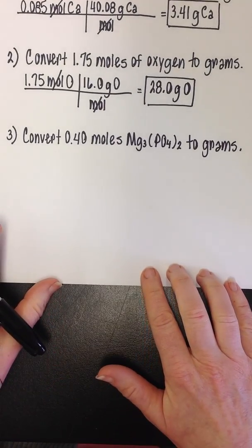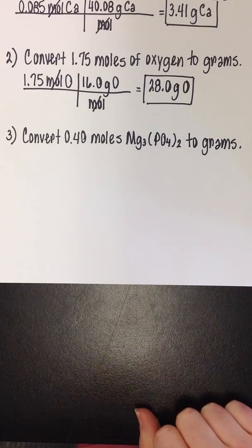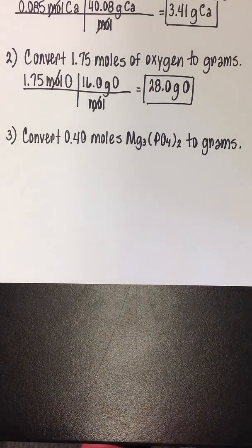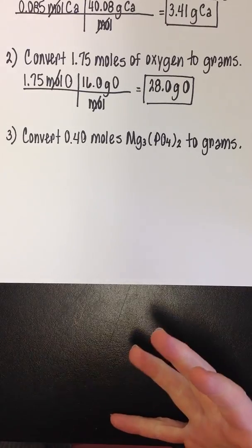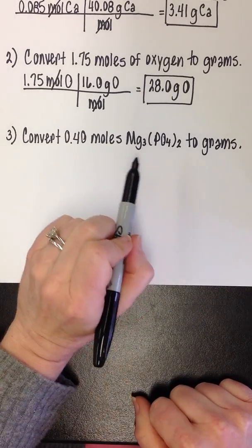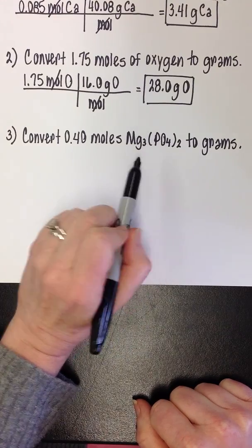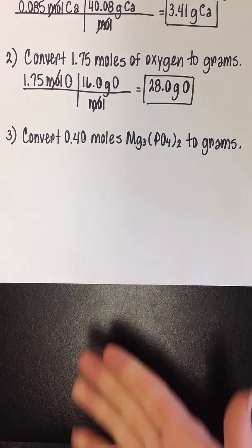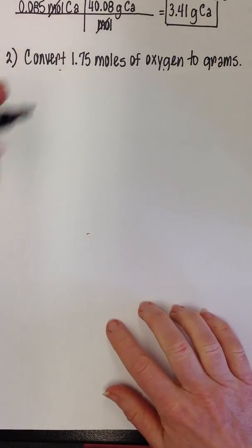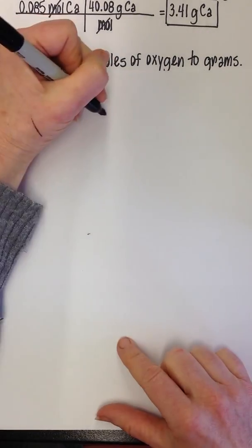Let's look at the next one. We're going to convert 0.4 moles of magnesium phosphate to grams. This time, we are not working with an individual element. We are working with a molecule. So we are going to have to figure out the mass of this to plug in. We're just going to do that real quick on another piece of paper.